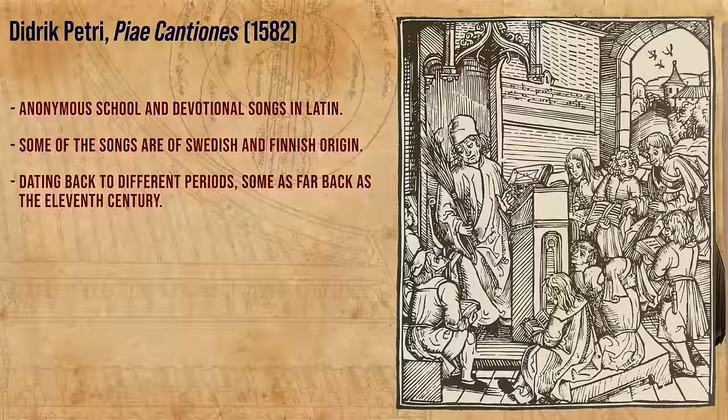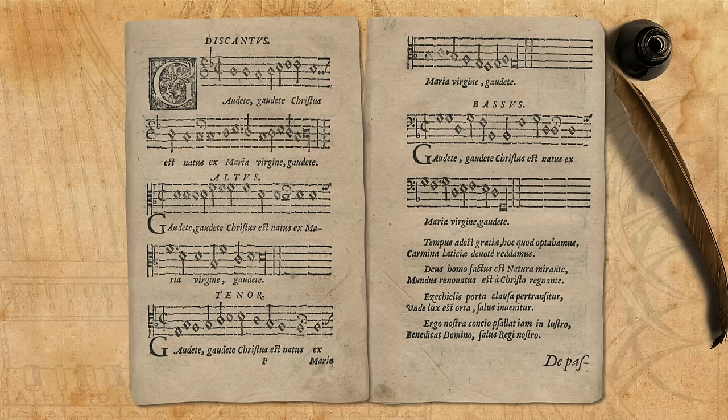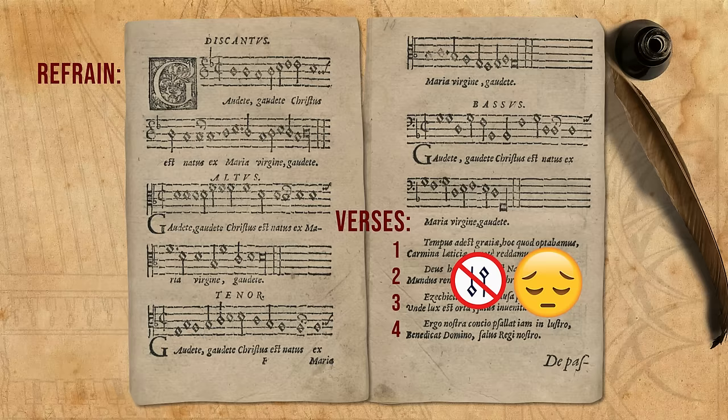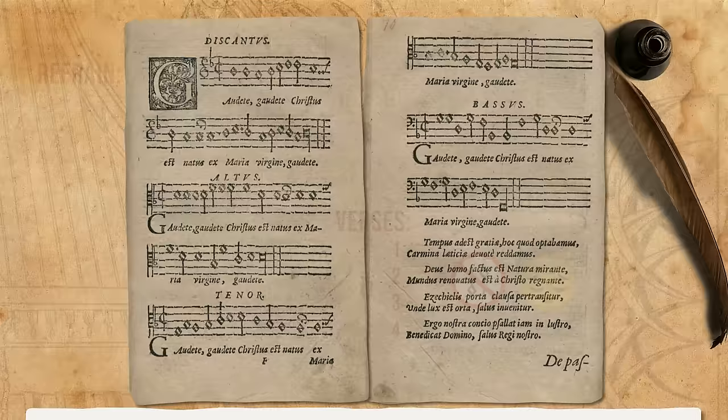While Gaudete might be based on an old melody, its four-voice setting in Piae Cantiones reflects 16th century techniques. It seems to be a refrain intended to be sung in between four verses of text, for which, sadly, and unusually for the source, no music is given. As a start, we will focus on this four-voice refrain.